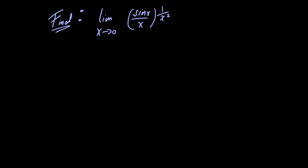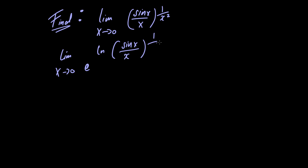Let's begin by rewriting the limit in the following form: the limit as x approaches 0 of e raised to the natural logarithm of sin of x divided by x, all raised to 1 over x squared. These two are equivalent because e raised to the natural logarithm of x is just equal to x. So we can move the limit inside the exponential function, as the exponential function is continuous, and we can use the power rule for natural logarithms to bring this power down to the front.